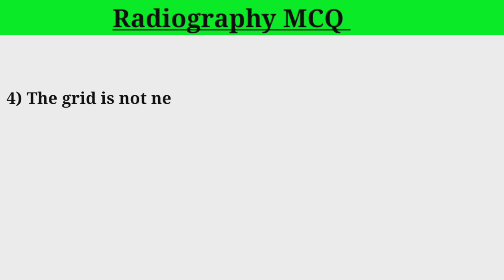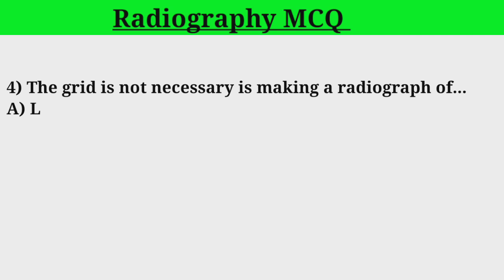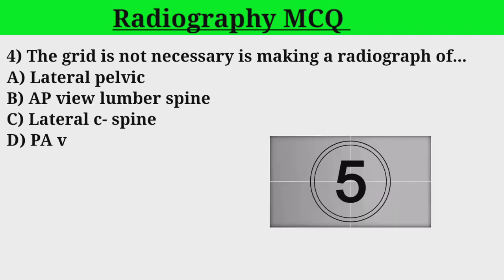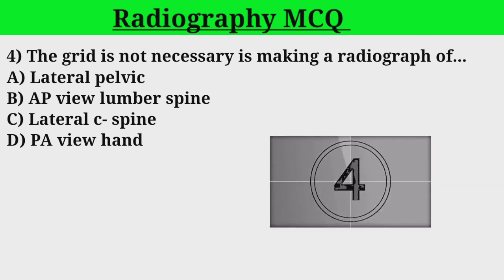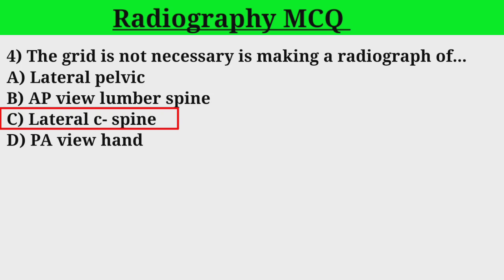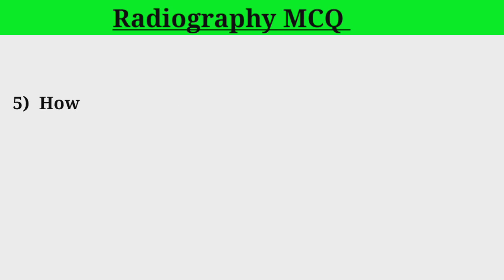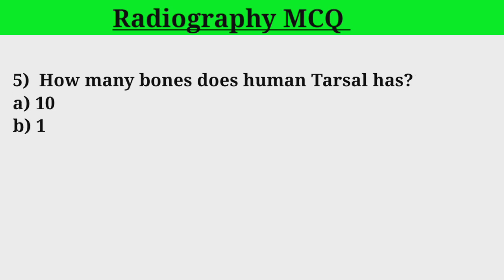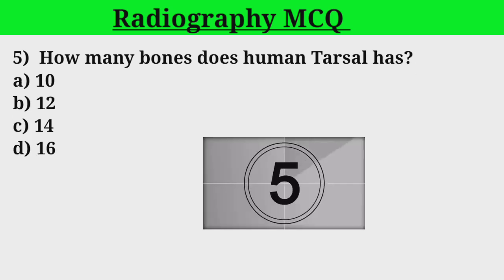Question 4. The grid is not necessary in making a radiograph of: A. Lateral pelvic. B. AP view lumbar spine. C. Lateral spine. Question 5. How many bones does the human tarsal have? A. 10. B. 12. C. 14. D. Correct answer: C (14).